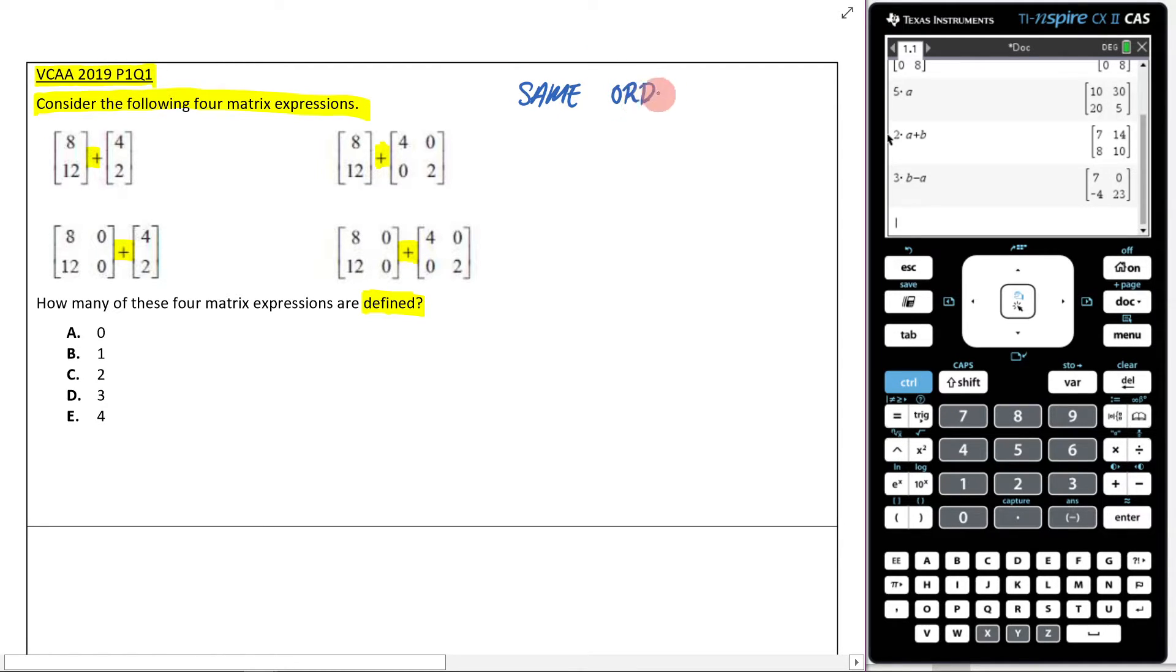So really, it's just saying which of these have the same order. Well, this one does. It's two rows by one column by two rows by one column. So both of these have the same order. So that's good.